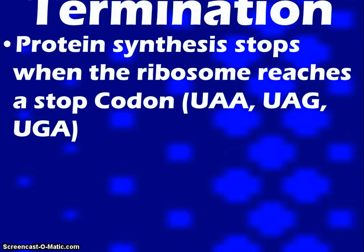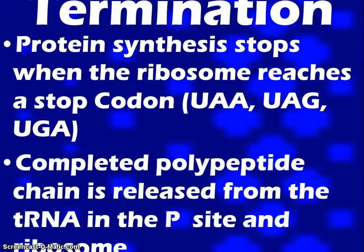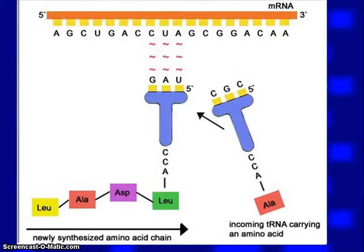This will occur until we hit a stop codon. The three stop codons we have are UAA, UAG, and UGA. Once it hits one of those, the polypeptide chain is released from the ribosome, and then we are done with the process. Amino acids can be added at a rate of 15 per second, and a single ribosome can make an average-sized polypeptide in less than a minute.